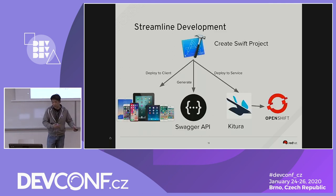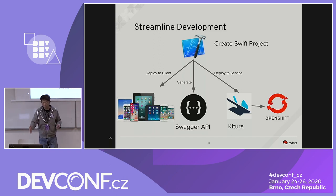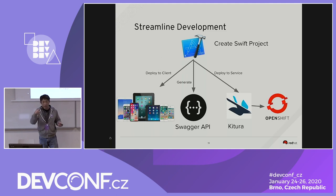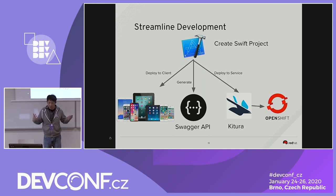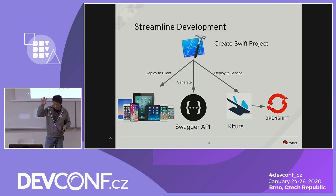Think about managing a development team where you manage all source code from a Swift Xcode project. It would deploy to the client on the iOS app, deploy to the Swagger API, generate Swagger documentation, deploy the service to Kitura, and Kitura as a container deployed to OpenShift. That's the beauty of using Swift and Kitura — everything comes from a single point of truth from the same Swift project.